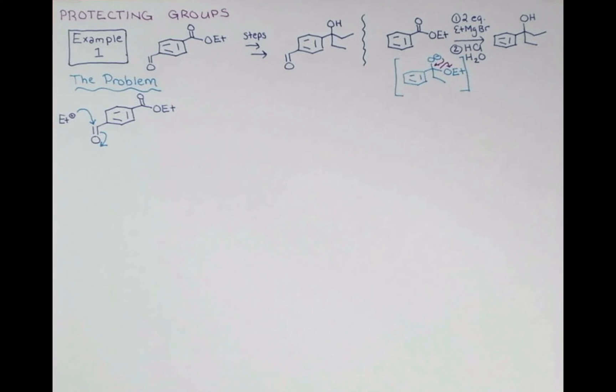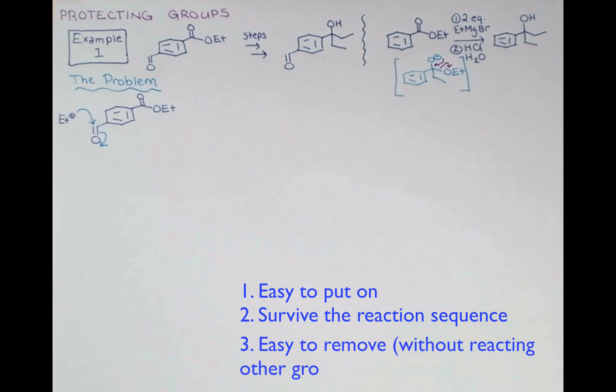There are three criteria for a protecting group. It must be easy to put on. Then it must be unreactive toward all the conditions that the molecule needs to go through, so every reaction that you put it on for, it has to be compatible with it. And then in the end, it should be easy to remove.